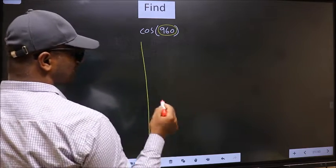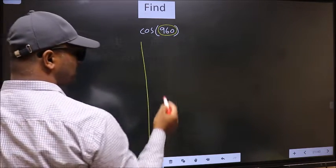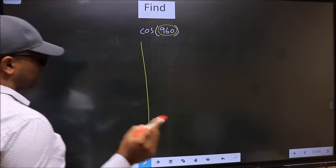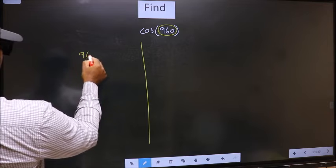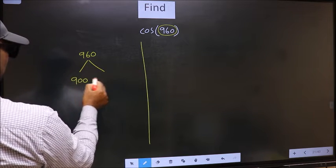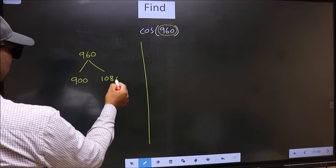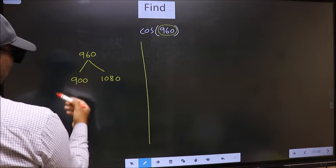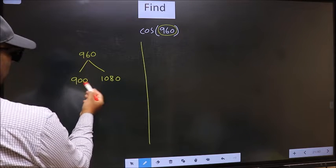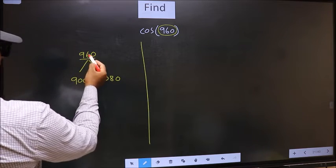Now you should check 960 lies between which two multiples of 180. What I mean is, 960 lies between 900 and 1080. This is 180 into 5 and this is 180 into 6. Between these two numbers, 960 lies.